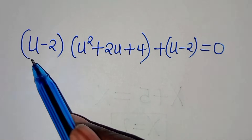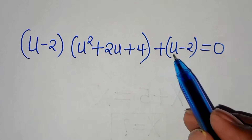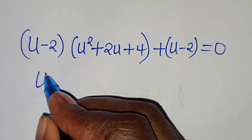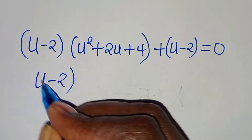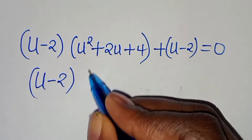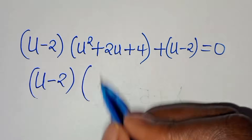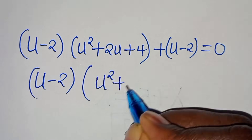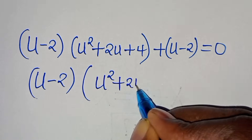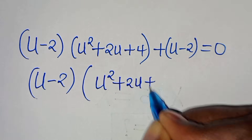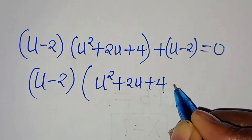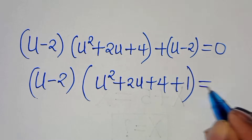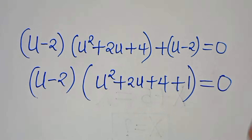Now we have that u minus 2 is common here, so we can factor out u minus 2, giving u minus 2 times the parenthesis u squared plus 2u plus 4 plus 1, close parenthesis, and this is equal to 0.